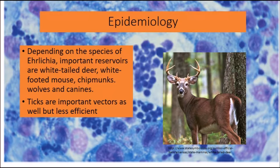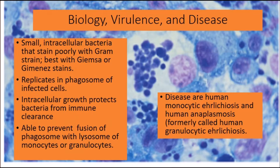A little bit of background on the genera of Ehrlichia and Anaplasma: they both consist of intracellular bacteria that target granulocytes, monocytes, erythrocytes, and platelets.